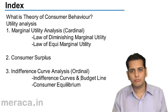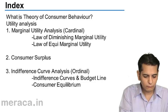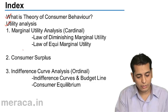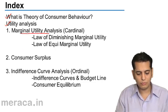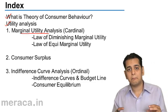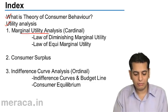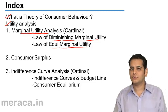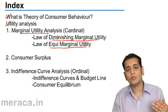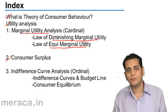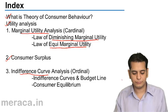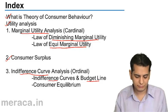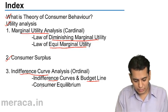I'll just give you a gist about the topics we'll be covering. First is the theory of consumer behavior. Then we study utility analysis, and under utility analysis we will study in detail about marginal utility. To study marginal utility, we need to study two laws: the law of diminishing marginal utility and the law of equi-marginal utility. Then we come to consumer's surplus. And finally, we'll do an analysis on the indifference curve — what are indifference curves, what is the budget line or the price line, and finally we'll come out with the consumer's equilibrium.